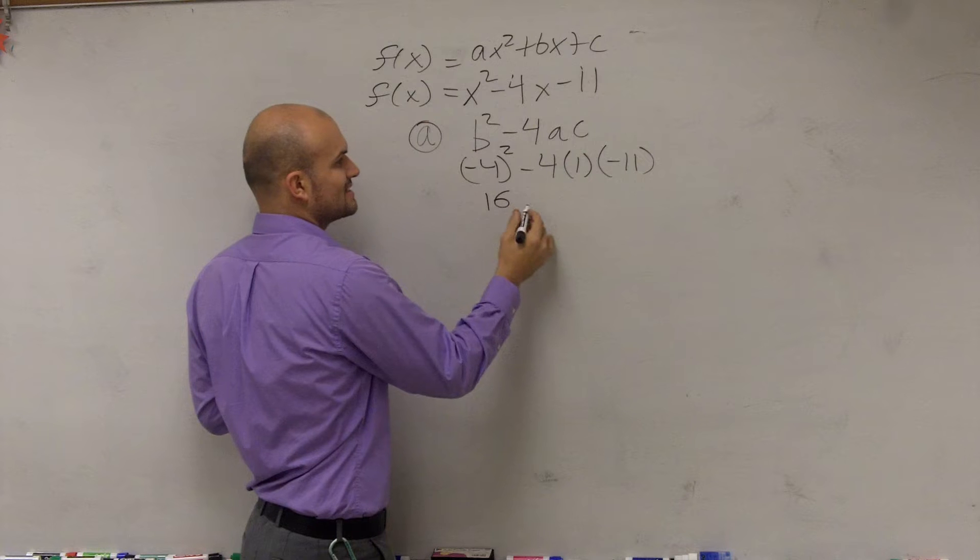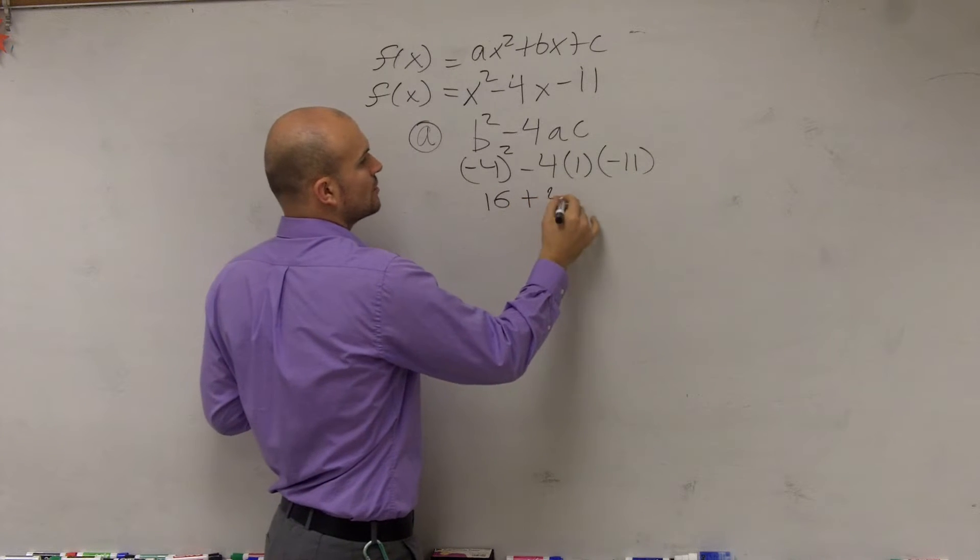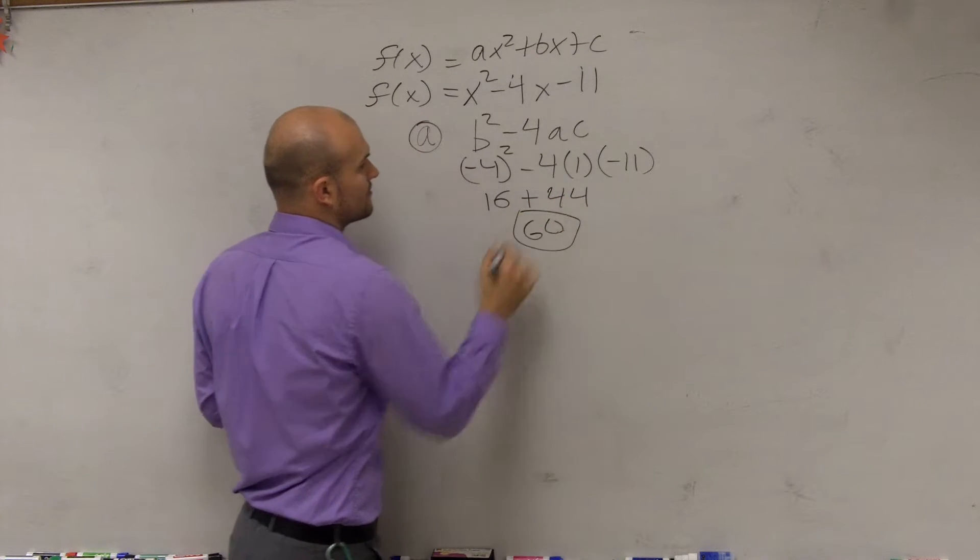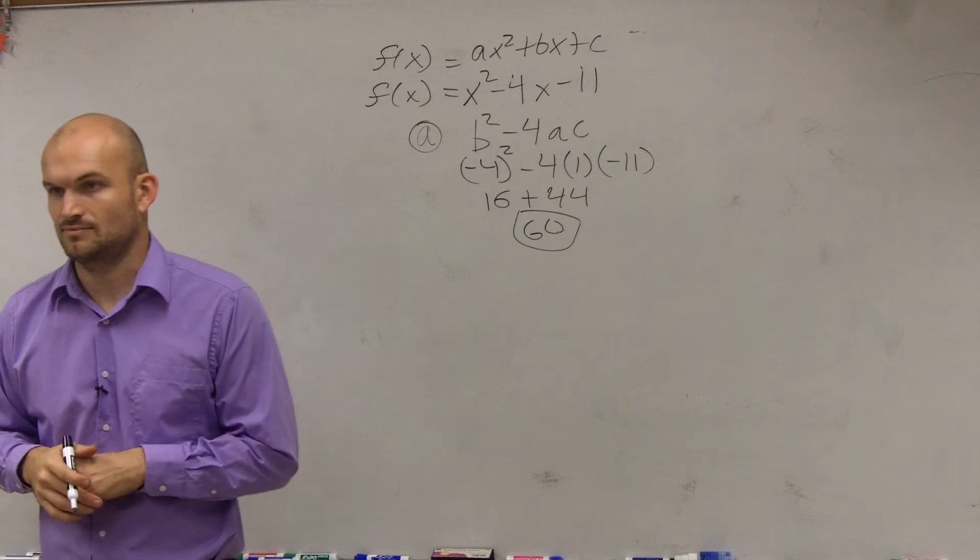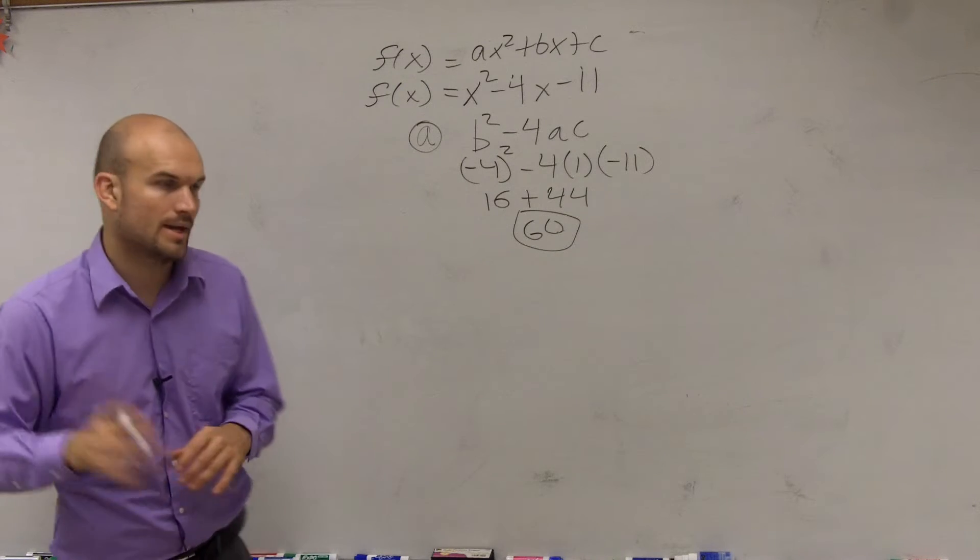That's squared. So I have 16 plus 44, which equals 60. So that was my answer to A. Got it?